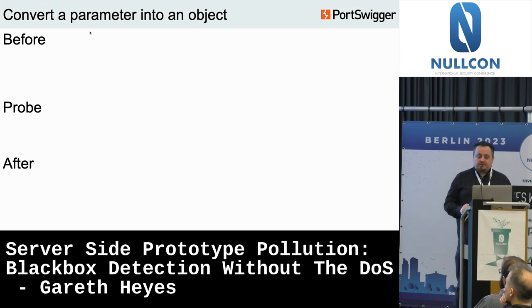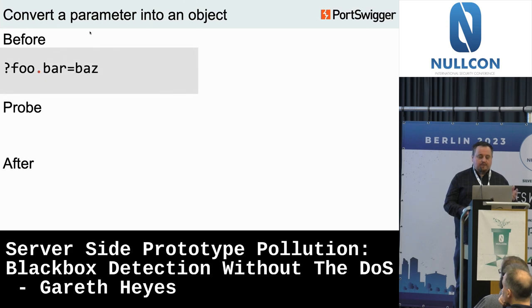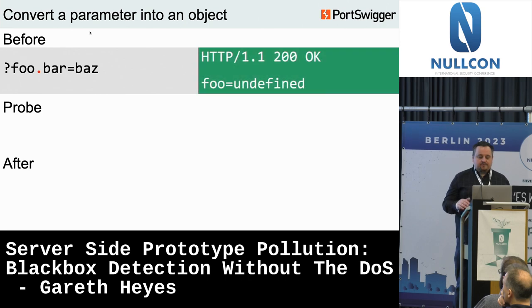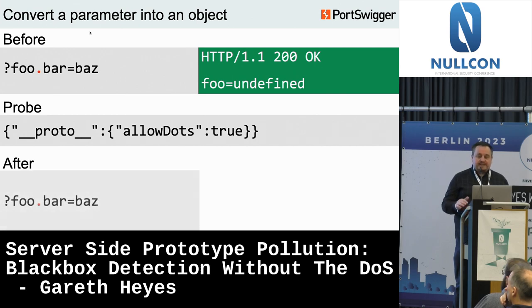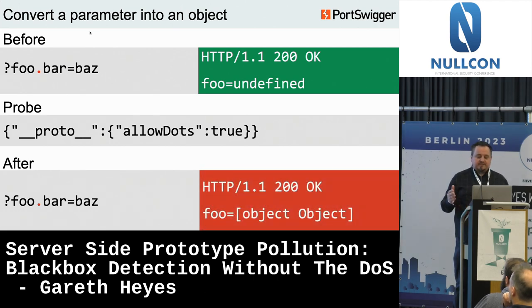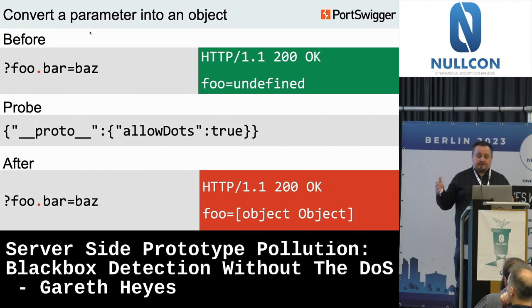This technique allows you to create objects from parameters. Before the probe, 'foo.bar=baz' shows foo is not reflected. If we change Express's behavior via prototype pollution with 'allowDots=true', when we send the original request again with 'foo.bar=baz', what we get back is an object. This is a good way of manually verifying prototype pollution and can also be used to combine attacks — if the application expects a certain object structure, you can use this Express configuration to create and then exploit it.